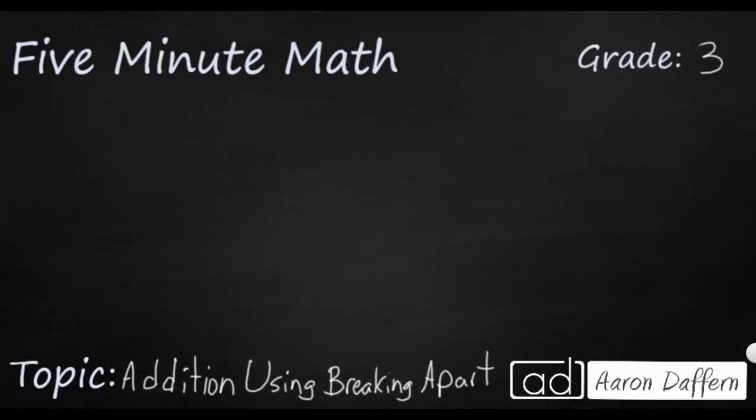So we are going to just take a look at simple three-digit plus three-digit addition. Let's come up with our first problem: 372 plus 496. We are going to use a strategy called breaking apart, and it's based off of the associative property of addition.